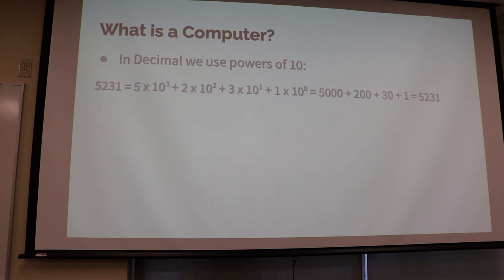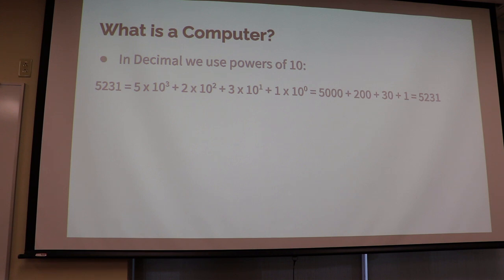And we start and put a one in the next place. We go ten, eleven, twelve, thirteen, fourteen, fifteen, and we keep going. So in a decimal world, when we see a number like 5, 2, 3, 1, we know that's 5,231. It's easy. The reason it is, is because we're taking those digits and multiplying them by powers of ten.